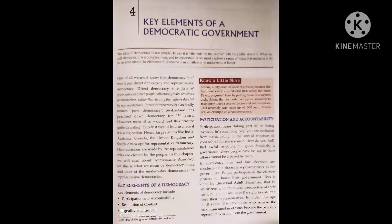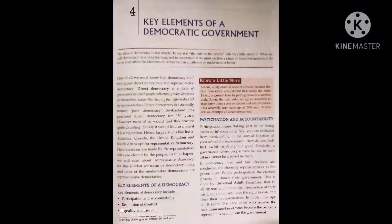Lesson 4: Key elements of democratic government. First page on your screen. First of all, we must know that democracy is of two types: direct democracy and representative democracy.